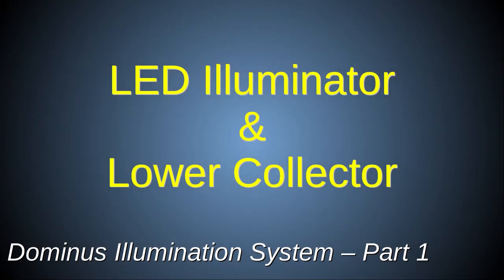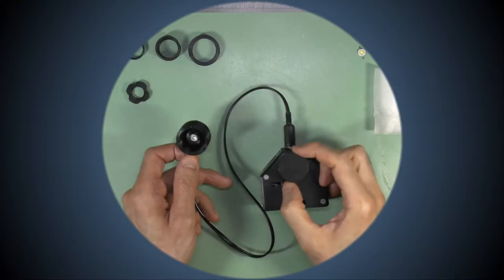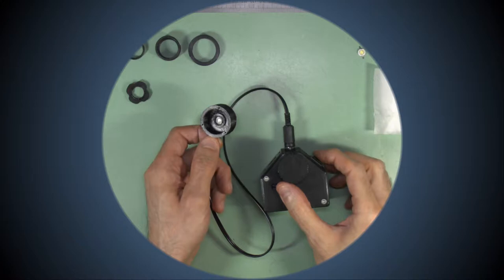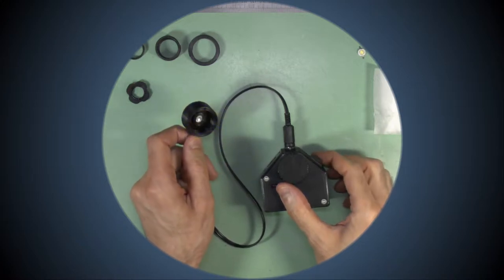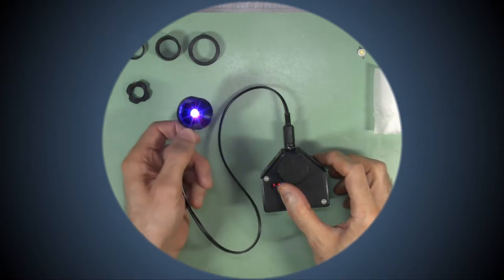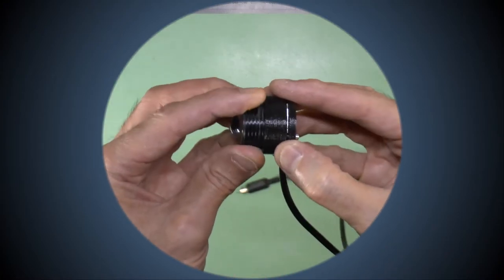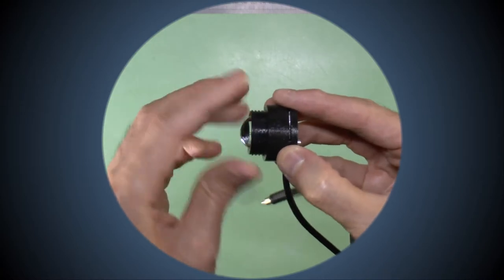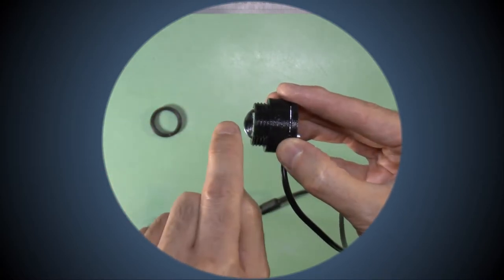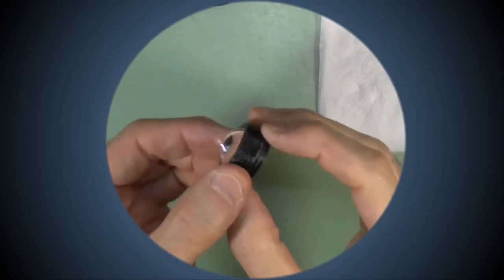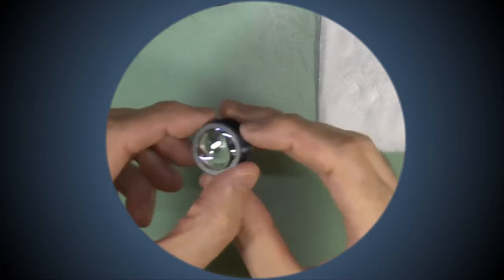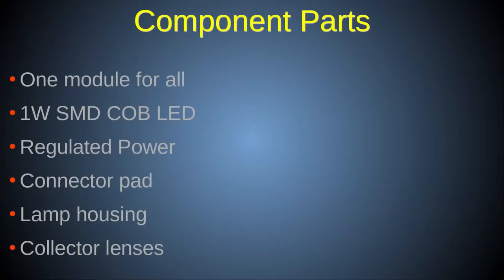In this video I'll explain how to make the LED illuminator module. This allows greater control over illumination compared to the passive mirror of the basic foundation scope. The illuminator is always used with a collimator lens system of some kind, so I'll show you how to build the 2 by 23 millimeter lower collector collimator.